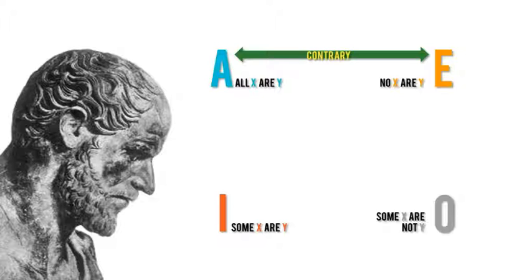Also, I and O are said to be subcontrary, because, again, assuming that we're talking about the same X and Y in each case, I and O can both be true, but they can't both be false.